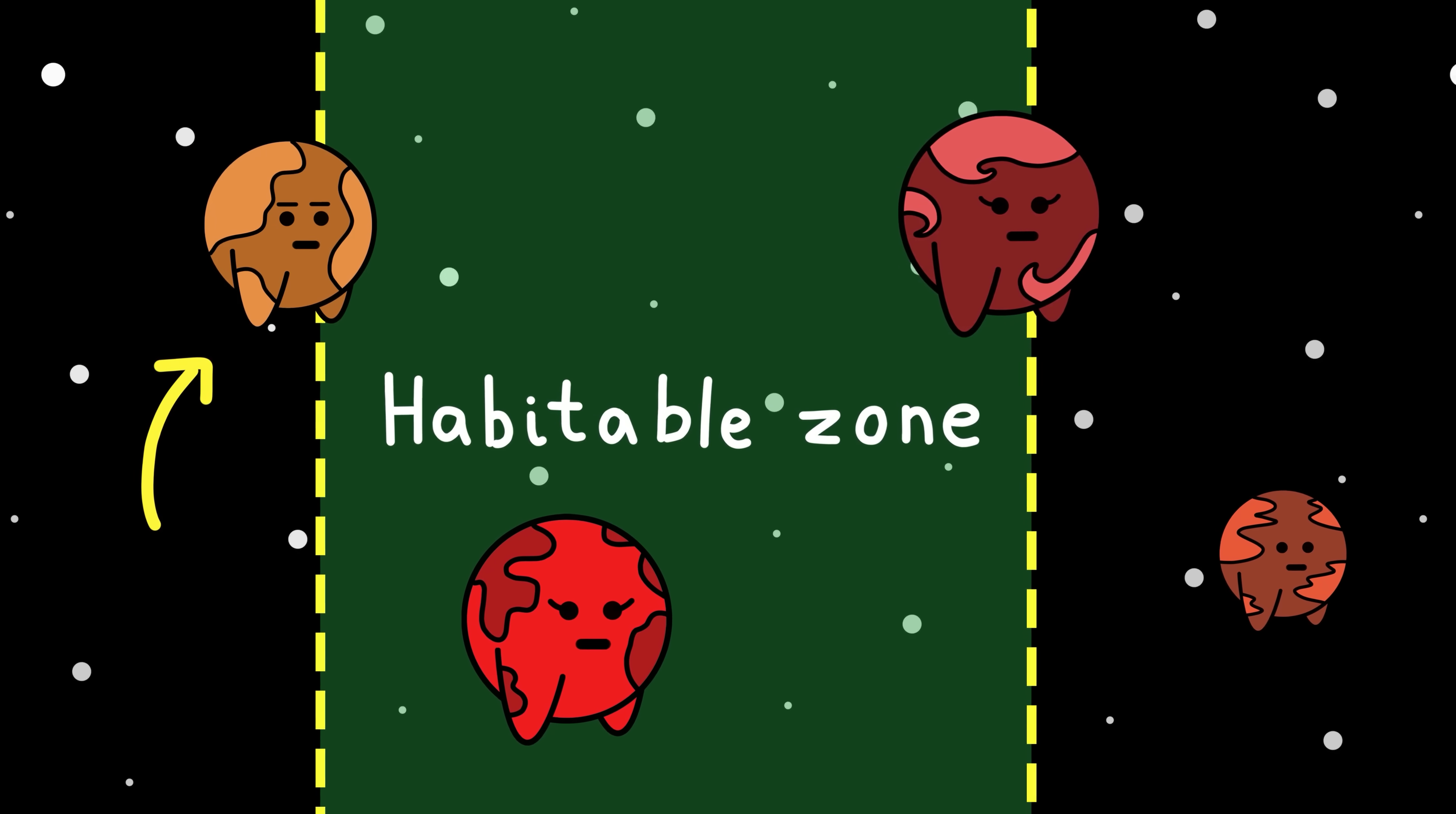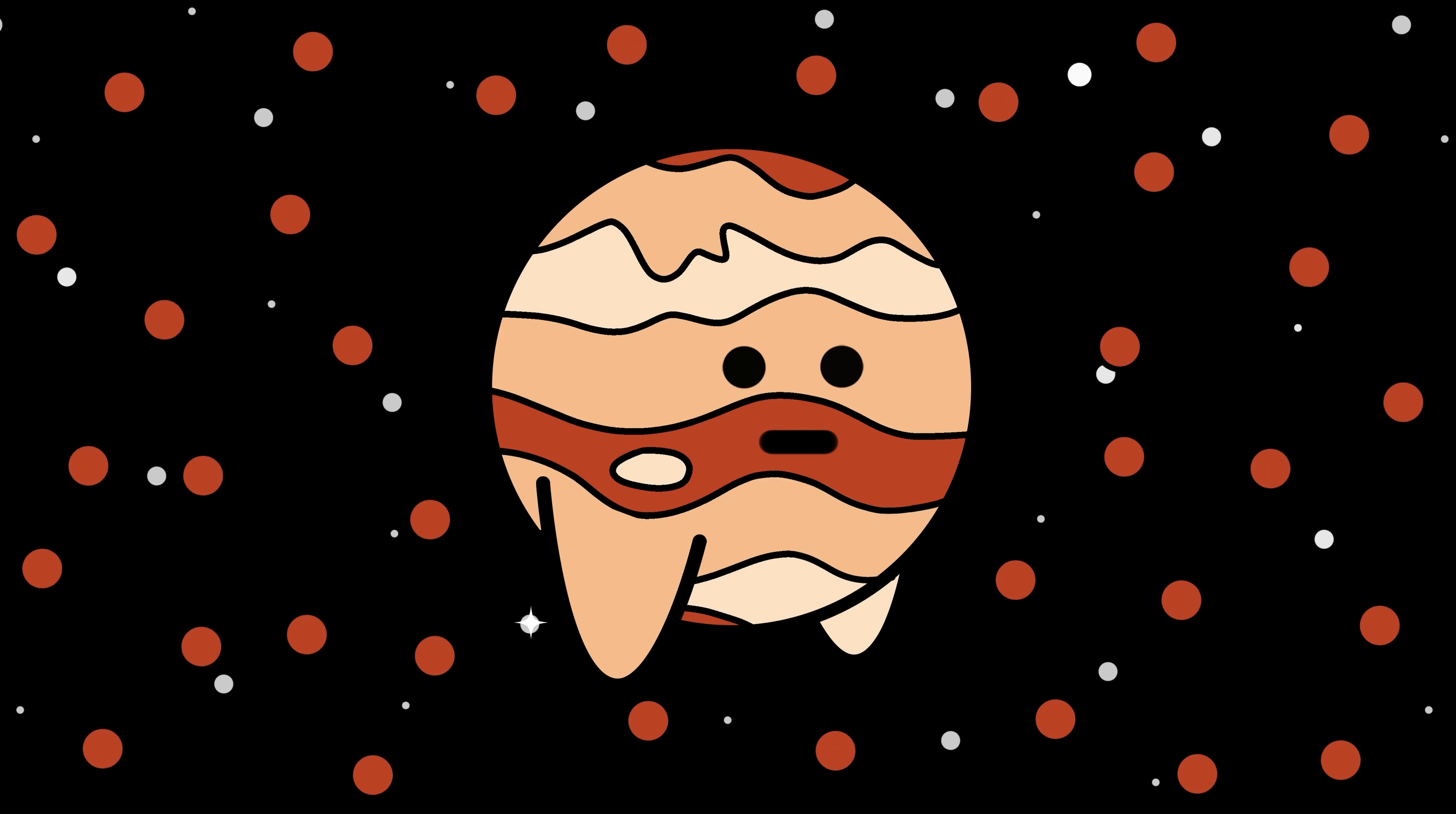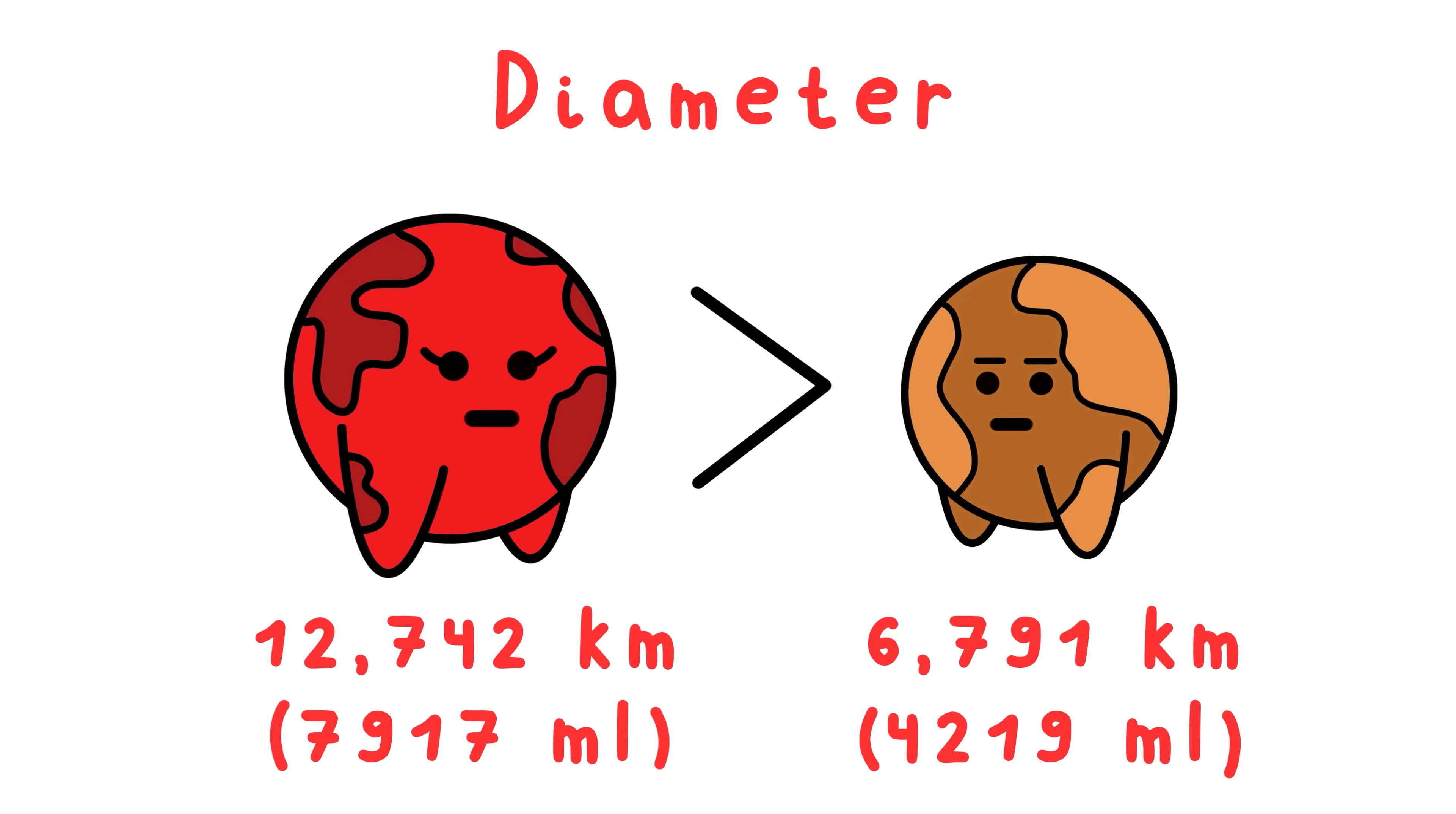It gets worse. Jupiter's early tantrum migration screwed up your entire formation process and basically prevented you from gaining all the material you needed to become the most popular planet. He scattered planetesimals everywhere like a toddler throwing its toys, and that means you ended up only being 53% of Earth's size. You could have been so much more.